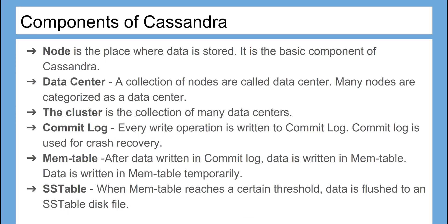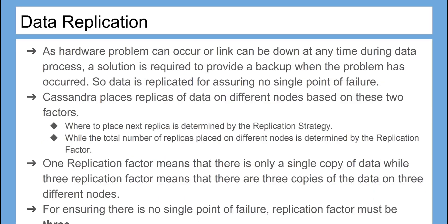Every write operation is written to the commit log, which is used for crash recovery. After data is written in the commit log, it is written in the mem table temporarily. When the mem table reaches a certain threshold, data is flushed to an SSTable disk file.